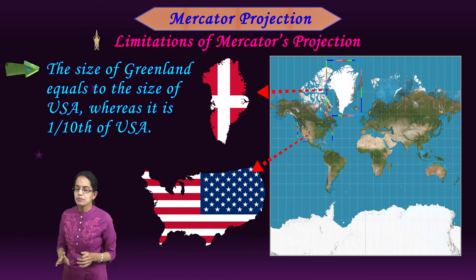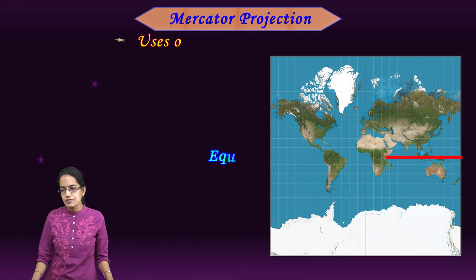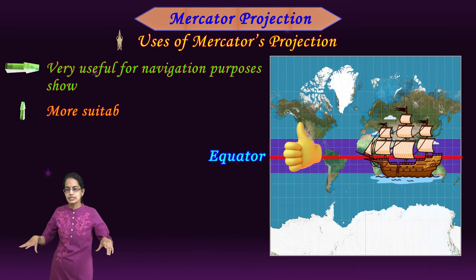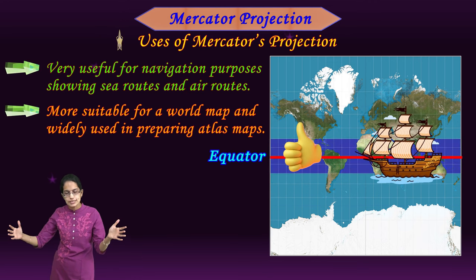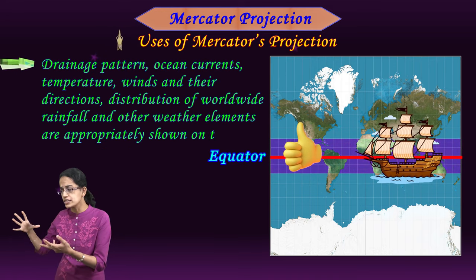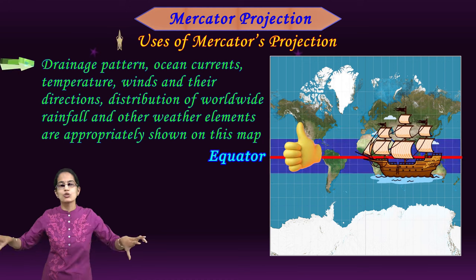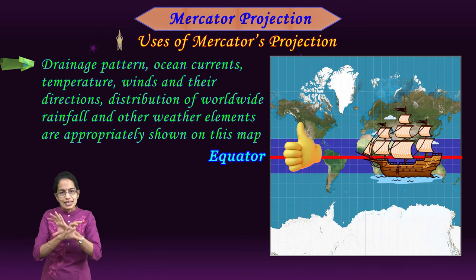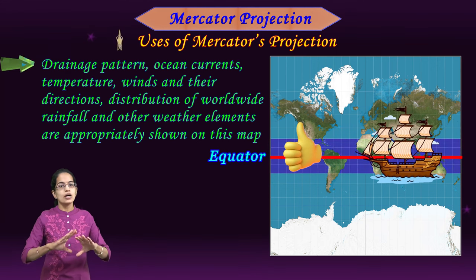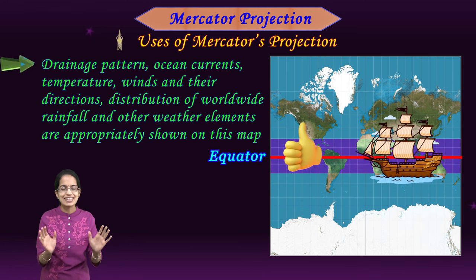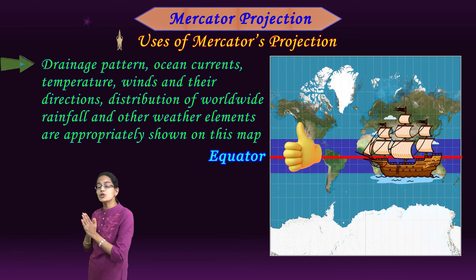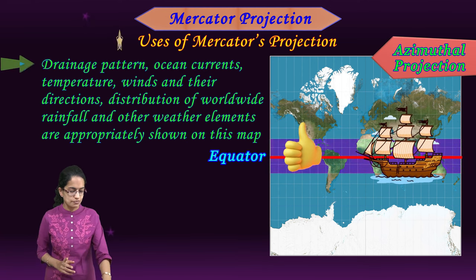Greenland appears huge and the size of the United States would be only one-tenth of Greenland in a Mercator projection. Equatorial regions are best represented by it. It is widely used for navigation by sailors traveling small distances, and to explain ocean currents, drainage patterns, winds, and monsoonal disturbances in regions closer to the equator. Mercator is also an azimuthal projection.